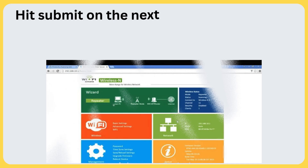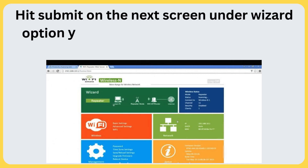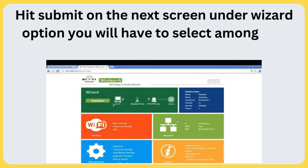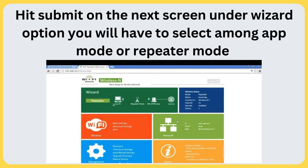It will open the login page. The default username and password for the wireless Wi-Fi repeater is Admin. Hit Submit. On the next screen, under Wizard Option, you will have to select either App Mode or Repeater Mode.